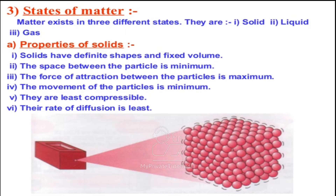The next property: the movement of particles is minimum in solid state. This is because there is a strong force of attraction between the particles — a strong electrostatic force of attraction is acting — because of which the particles are held together very strongly and that is why they cannot move. The movement of the particles is minimum. Next, they are least compressible, because they have a definite mass, definite volume, and also strong forces of attraction between the particles.